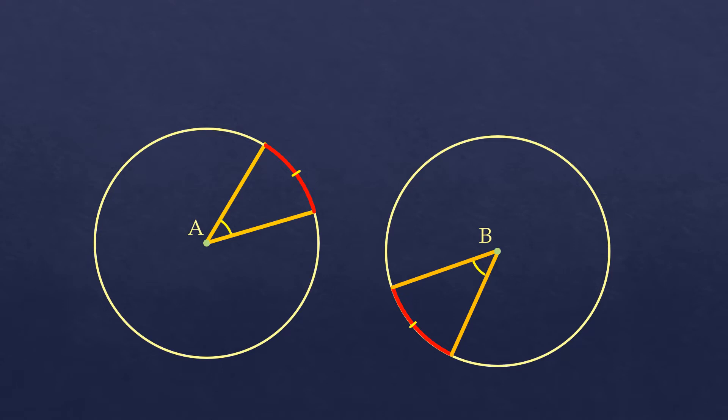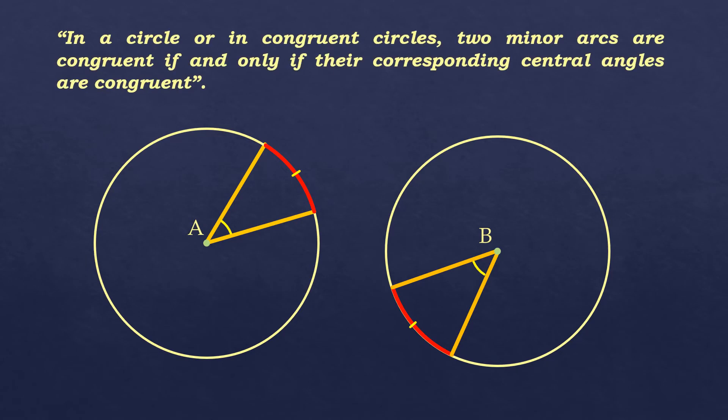Our basis for this is the theorem: in a circle or in congruent circles, two minor arcs are congruent if and only if their corresponding central angles are congruent. It's applicable for two different circles when those circles are congruent circles, meaning the same measure of radius.